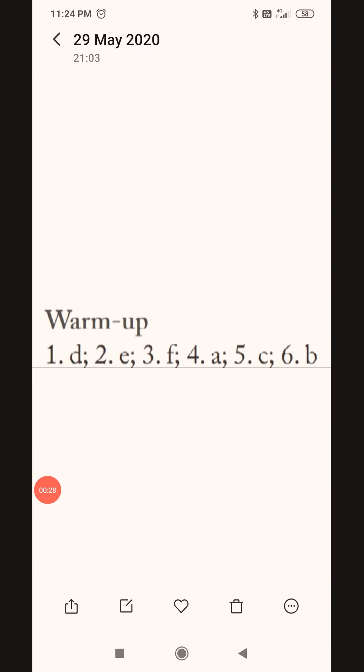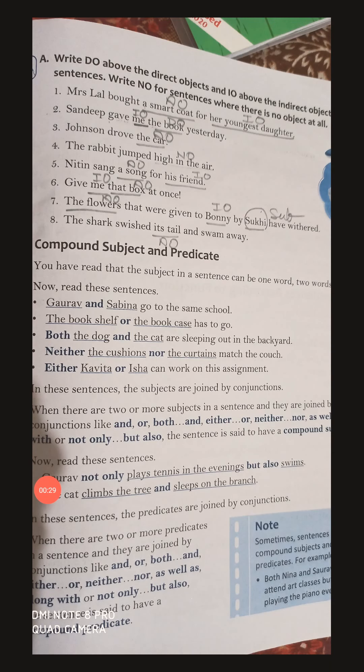The next exercise was also given yesterday. In this exercise, you had to find the direct object and indirect object, and write 'no' for no object. I'm not going to explain again — yesterday I explained it thoroughly and completely. Hope you guys have watched that video.